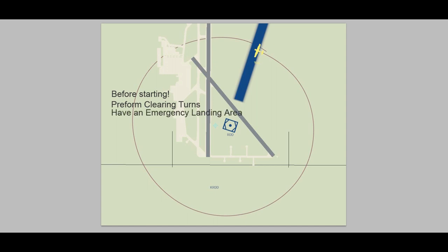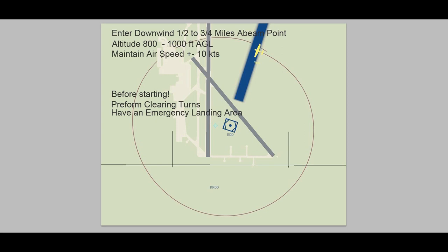You also need to have an emergency landing area — know where you are going to set the airplane down if something goes wrong. We are going to be flying between 800 and 1,000 feet above ground level, AGL, and you don't have a lot of time if things don't go well. So the first thing we are going to do, as I mentioned, is enter downwind, one half to three quarters of a mile abeam the point. We have to maintain our airspeed of plus or minus 10 knots, maintain altitude of plus or minus 100 feet, and never bank more than 45 degrees — that will fail you right off the bat. These are the things they expect when you are doing this for your private pilot certificate.